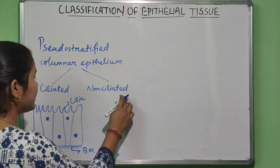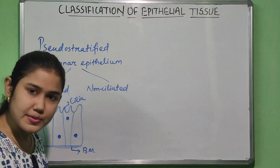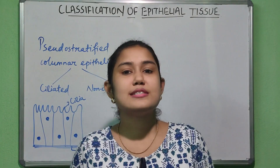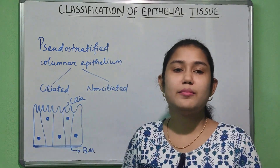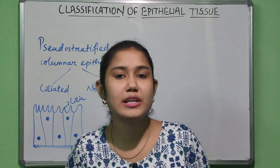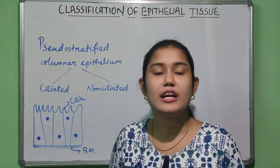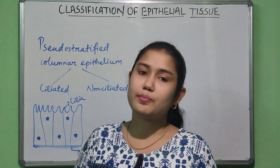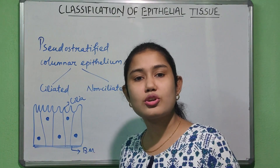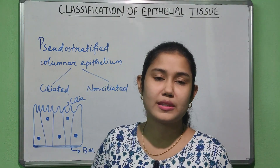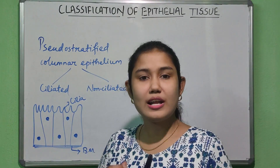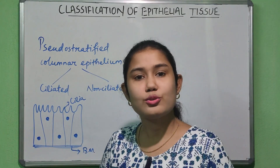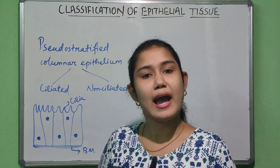In non-ciliated epithelium, the cilia is absent. This pseudo-stratified columnar epithelium is found in the airways of the upper respiratory tract. Its main functions are secretion and movement of mucus through ciliary action.